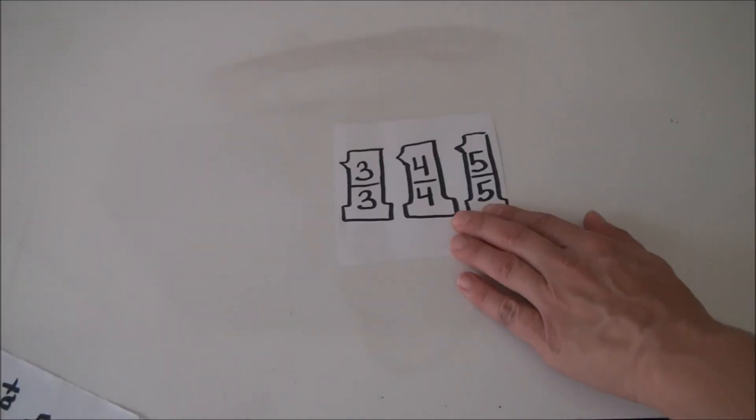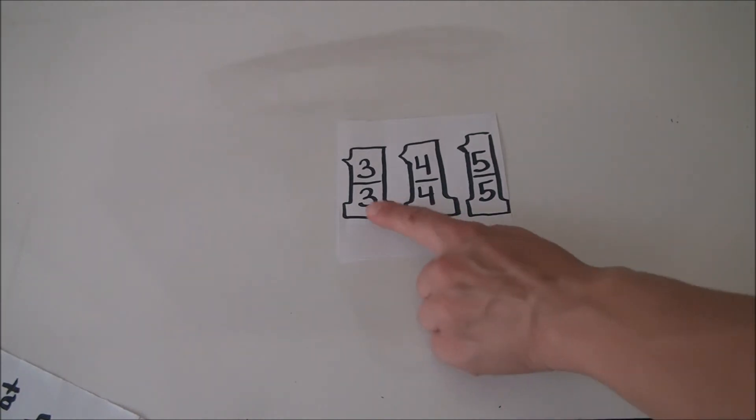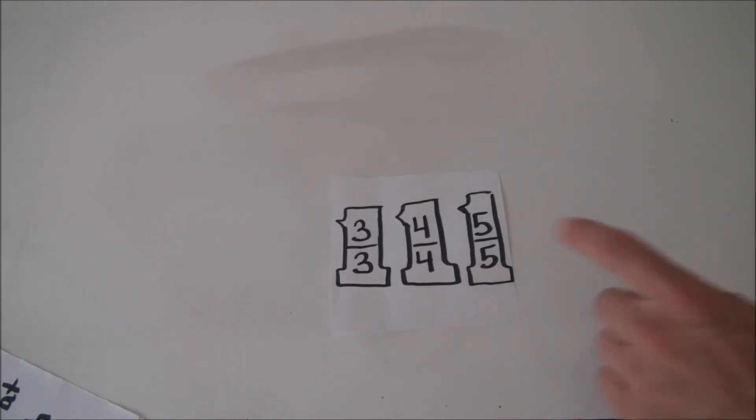Today and every day, we can create equivalent fractions by multiplying by a fraction equal to one. This creates common denominators without changing our original fraction's value so that we can easily add and subtract.